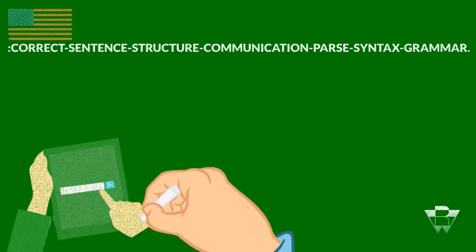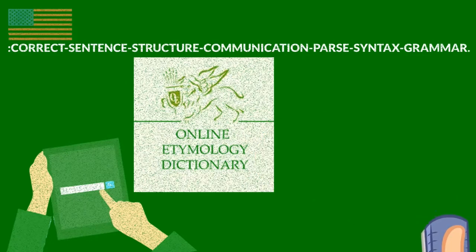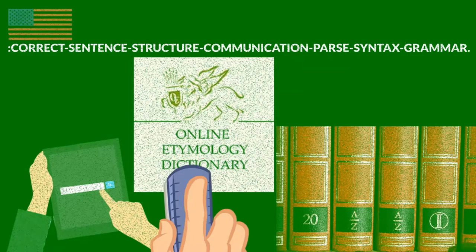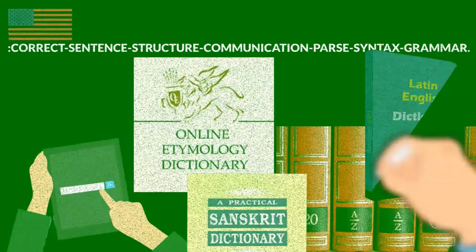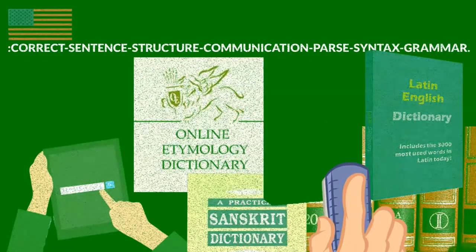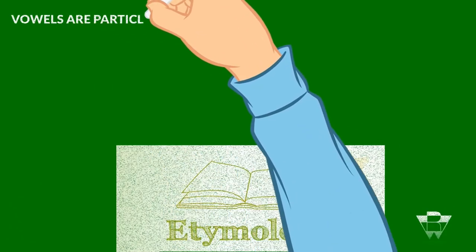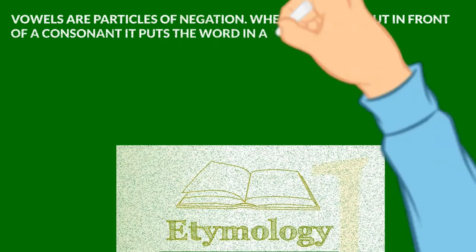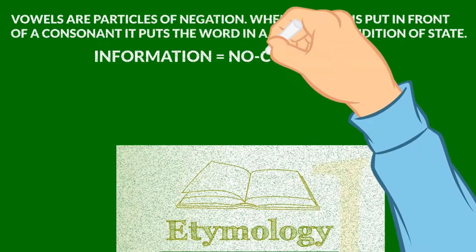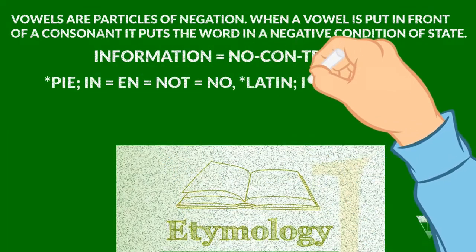If you have access to the internet, you can find an etymology dictionary, a Latin dictionary, a Greek dictionary, a Sanskrit dictionary, and you can look these things up yourself and parse the words. What you would do is parse each syllable of the word and find out the earliest meaning of the word — that's an etymological rule of thumb that I use.